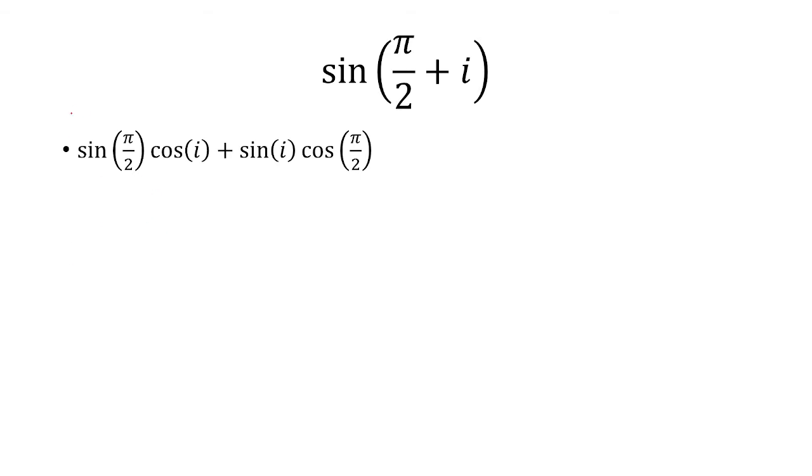If you have sine of x plus y, that is sine of x times cosine y plus sine of y times cosine of x. Here x is going to be pi over 2 and y is i.